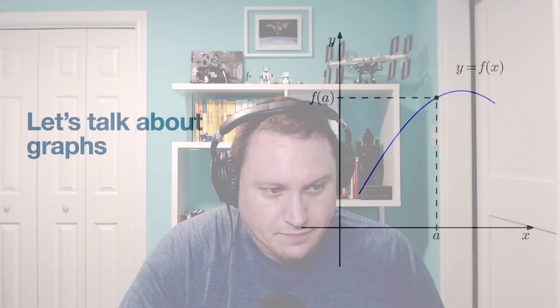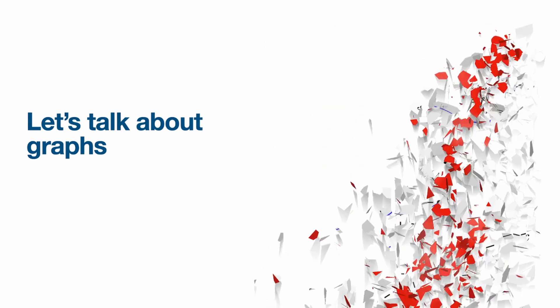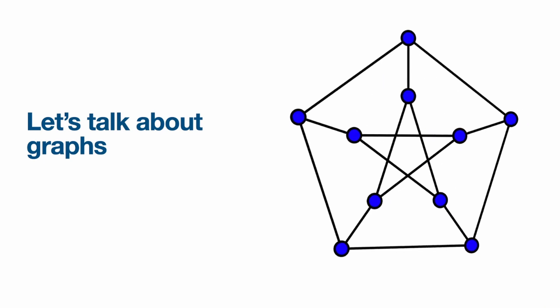I want to give a little bit of an introduction to what we're going to be talking about and some of the Python that's going to be needed in order to follow along with the series. So let's talk real quick about what we mean by a graph. Now, this is a graph of a function — this is not what we're talking about. We're talking about a different kind of graph, these kinds of graphs.